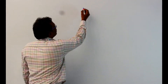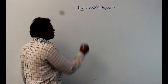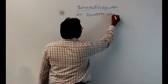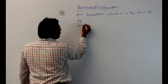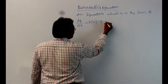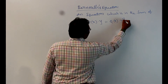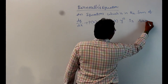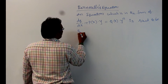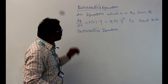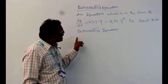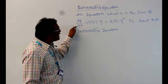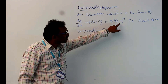We are going to discuss Bernoulli's equation definition. An equation of the form dy/dx + P(x)·y = Q(x)·y^n is said to be Bernoulli's equation. This is actually an extension of the linear differential equation dy/dx + P(x)·y = Q(x)·y^n.